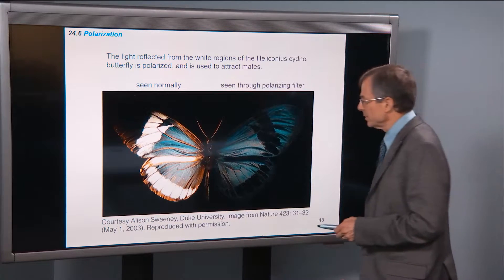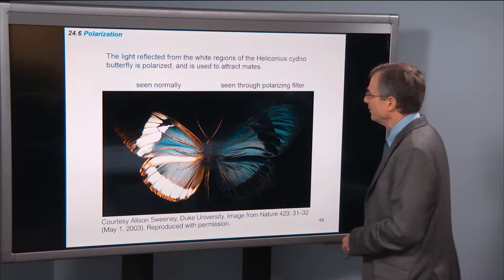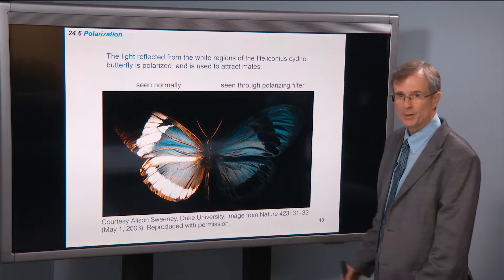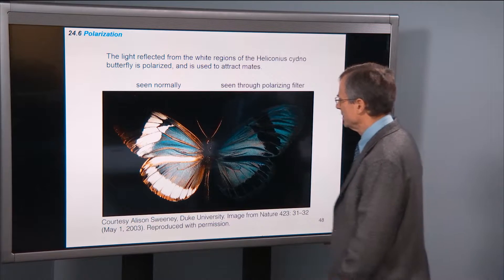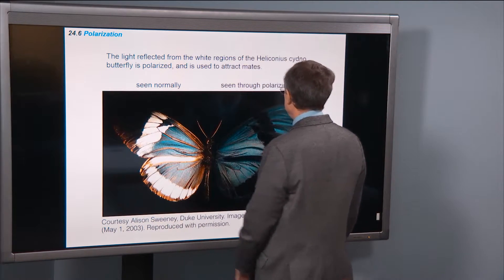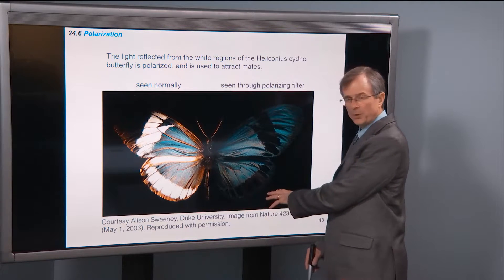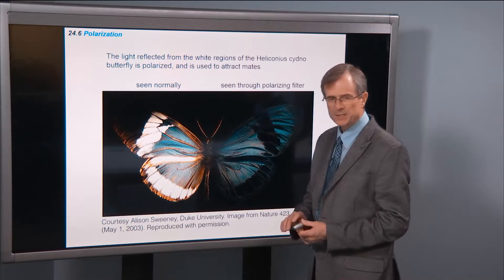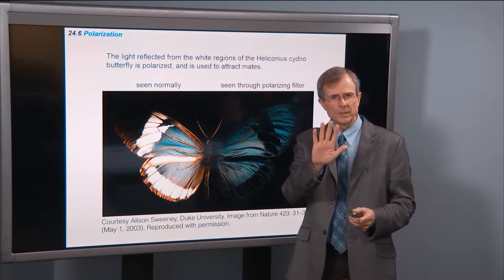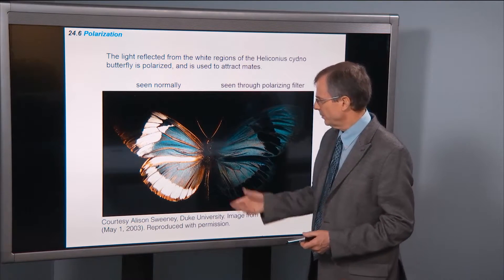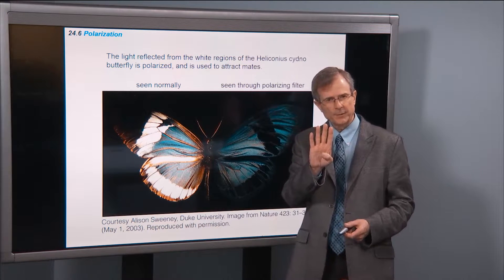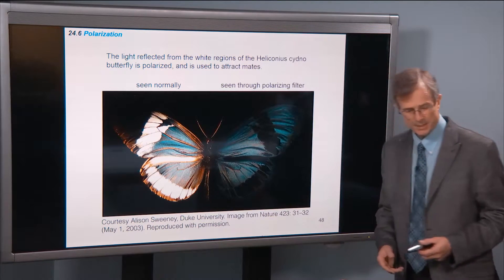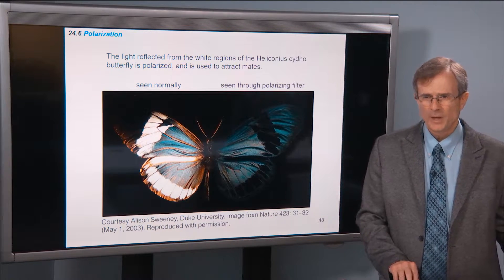An example, or an application: the light reflected from the white regions of this butterfly — I don't know how to pronounce that kind of butterfly — is polarized. This is seen in normal light, and this is seen through a polarizing filter. We'll talk about these polarizing filters, which basically select out only the part of the radiation with the electric fields in a particular direction. It's a very beautiful butterfly that happens to have polarizing wings.